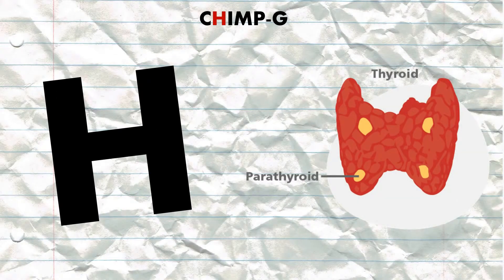H stands for hyperparathyroidism, and this is also one of the more common causes of hypercalcemia. Parathyroid hormone causes the kidneys to increase calcium uptake, excrete phosphate, as well as converting vitamin D to an active metabolite form, further facilitating reabsorption of calcium.